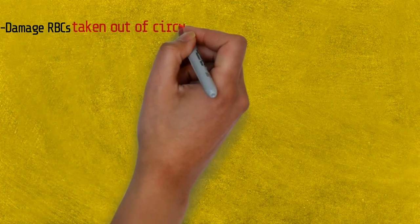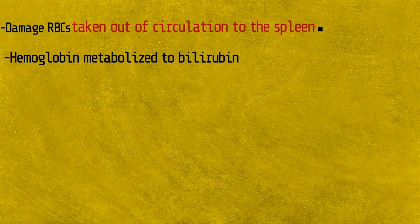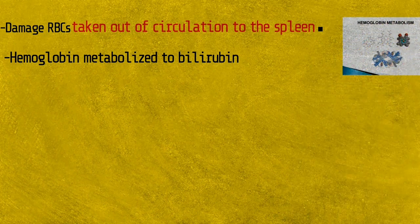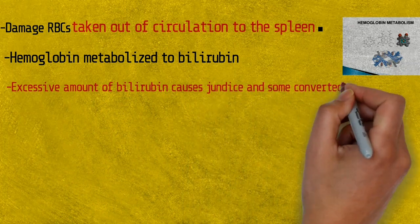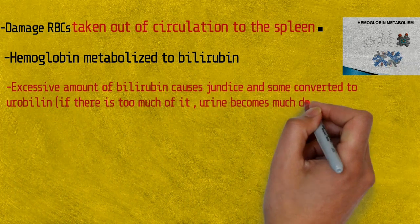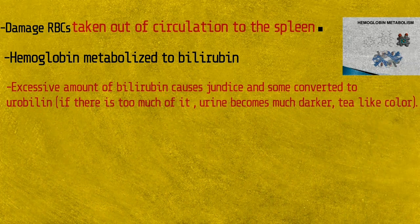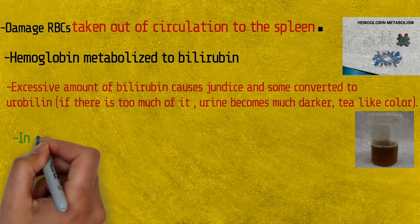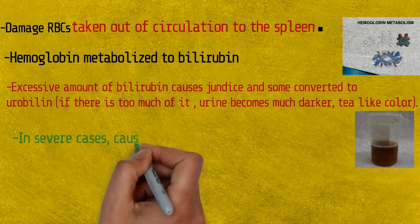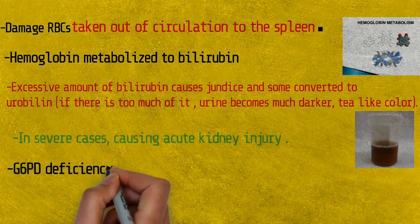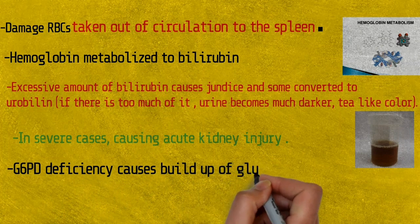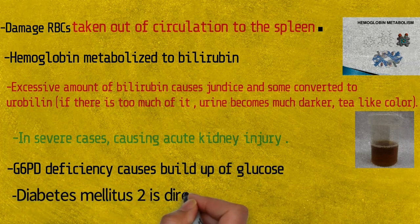When G6PD deficiency is present, free radicals damage red blood cells, which are then removed from circulation to the spleen, where hemoglobin is metabolized to bilirubin. Excess bilirubin causes jaundice, and some converts to urobilin — if there is too much urobilin, urine becomes dark tea-like in color. In severe cases, hemoglobin can be excreted directly by the kidneys, causing acute kidney injury. G6PD deficiency also causes buildup of glucose, and thus type 2 diabetes mellitus is directly related to G6PD deficiency.